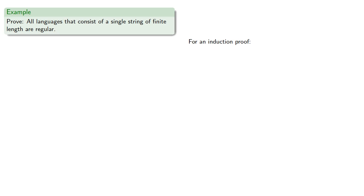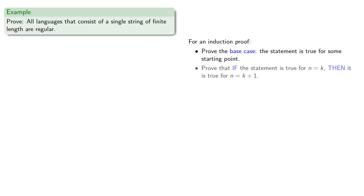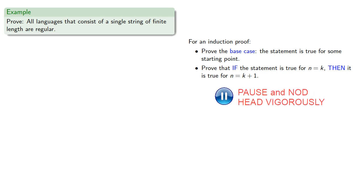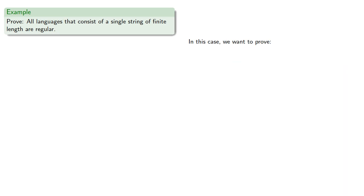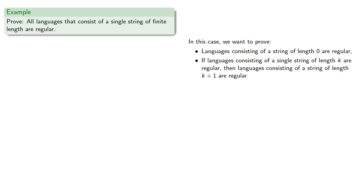For an induction proof, we want to first prove the base case — the statement is true for some starting point — then prove that if the statement is true for n equals k, then it is true for n equals k plus 1. In this case, we want to prove two things: our base case, that languages consisting of a string of length 0 are regular, and our induction step, that if languages consisting of a string of length k are regular, then languages consisting of a string of length k plus 1 are regular.